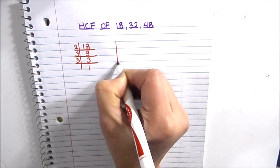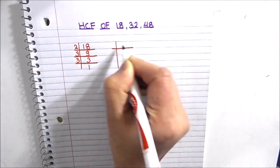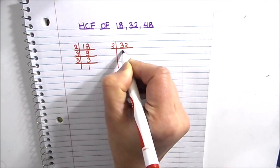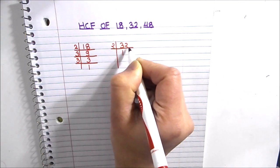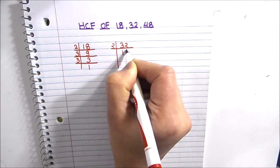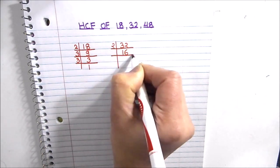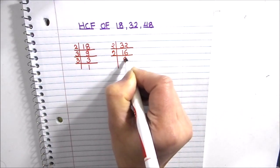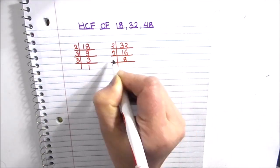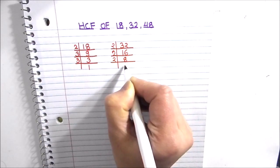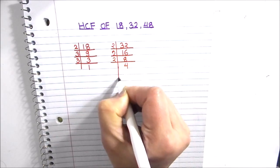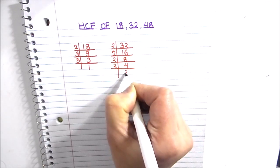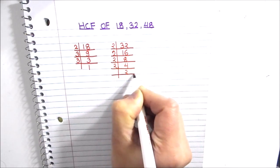Let's divide number 32. Now 32 is also an even number, it is divisible by number 2. 16 is again divisible by 2. 2 times 8 is 16. 8 is divisible by 2 again. 2 times 4 is 8. 4 is an even number, it is divisible by 2. 2 times 2 is 4, and 2 times 1 is 2.